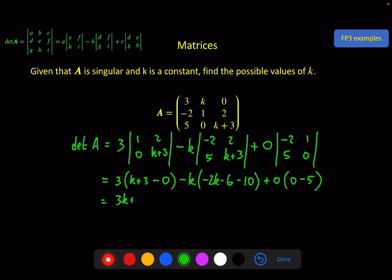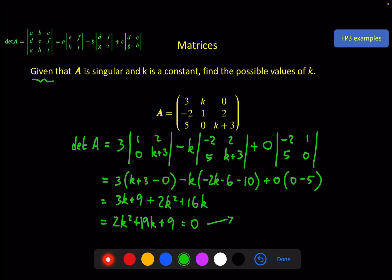Then we've got 3k+9, and over here we've got plus 2k² plus 16k, and then of course the 0. Tidying this up, we've got 2k² + 19k + 9, and given that A is singular, that must equal 0. Factorising gives (2k+1)(k+9), therefore k is equal to minus 1/2 or minus 9 — and these are my two answers for k.